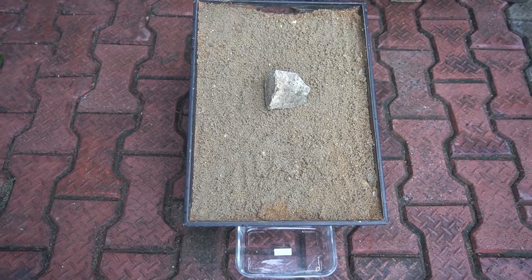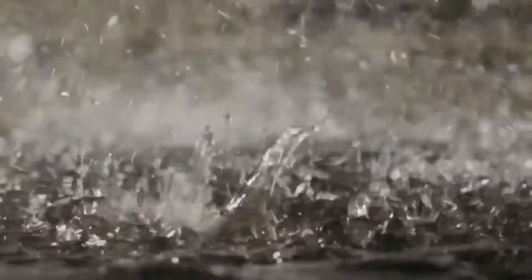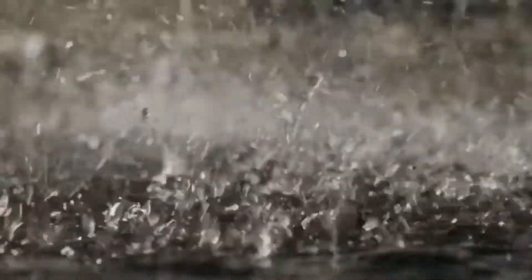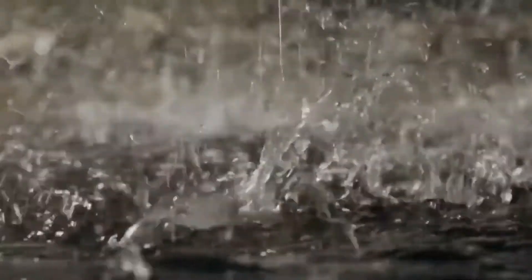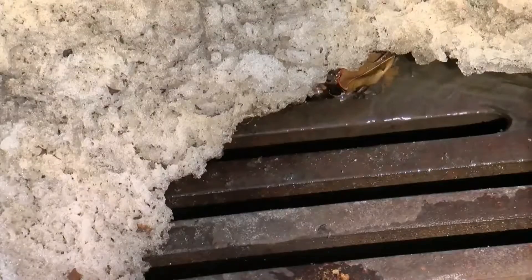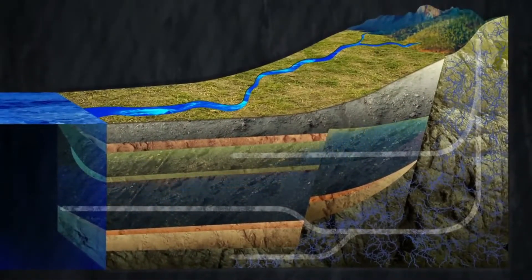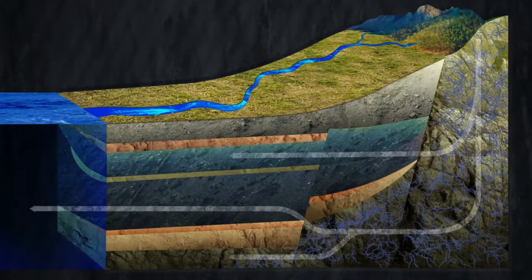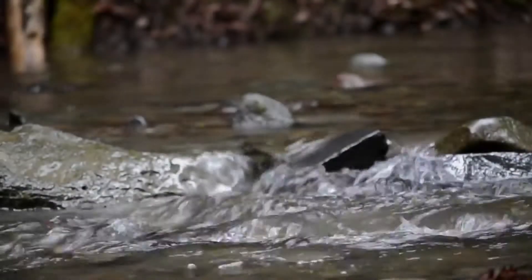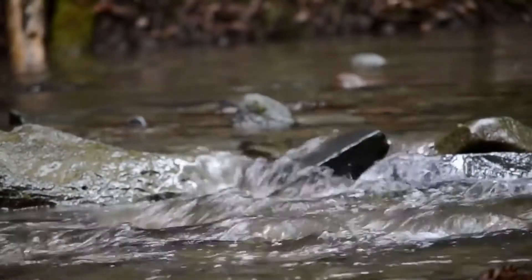Think about all the rain that falls upon the earth and think about all the water that comes from the melting snow. Some of that water goes into the ground and some of the water remains on the surface of the earth. It gathers together and collects in the hollows and the gullies, and it begins to form streams and eventually rivers.